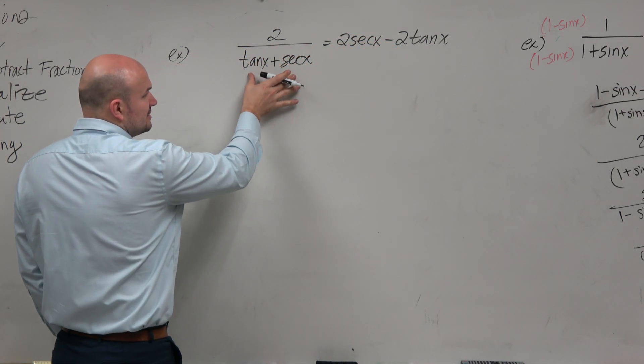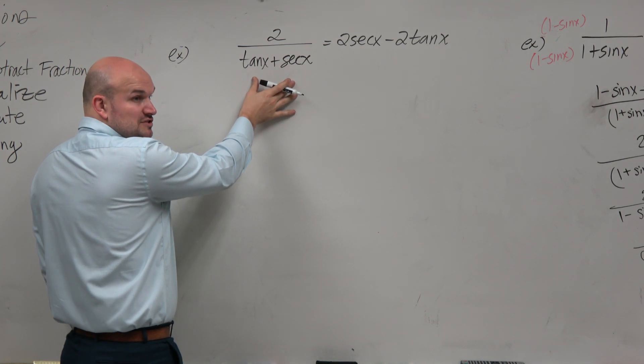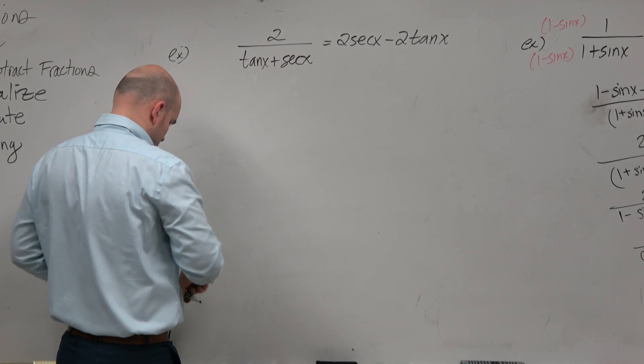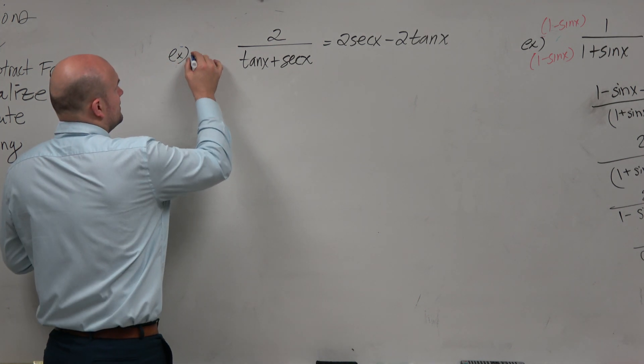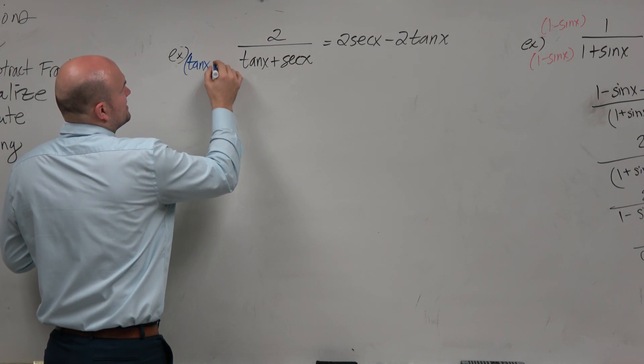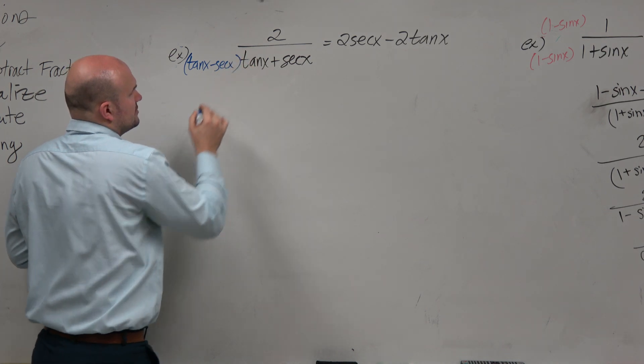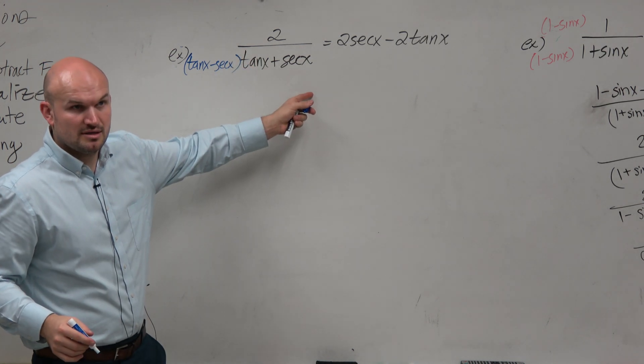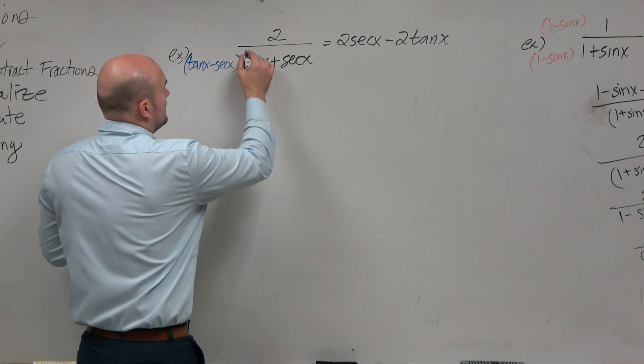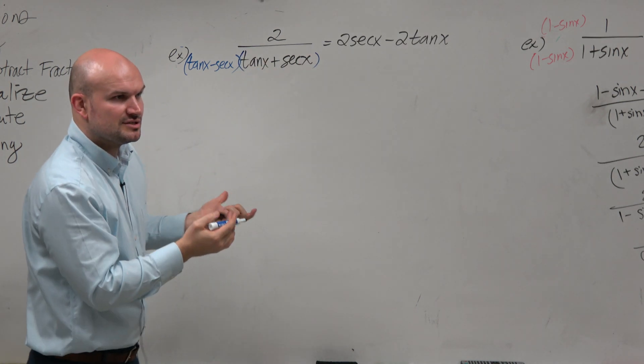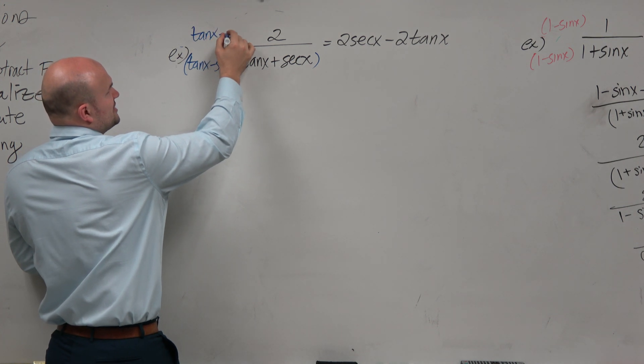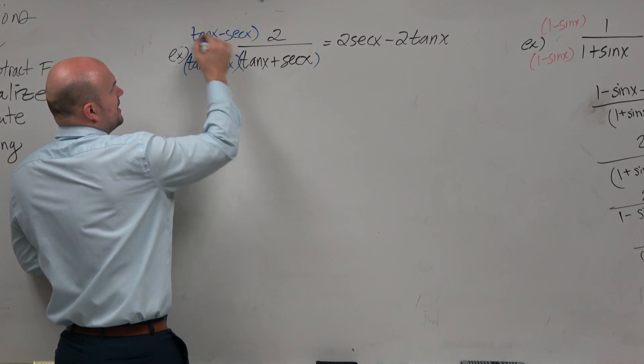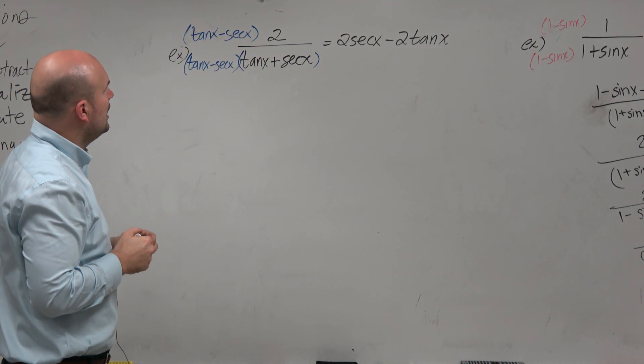So let's think about this. The conjugate that would create the difference of two squares here is going to be tangent of x minus secant of x. That's now a difference of two squares, right? Really easy to multiply. And then just remember, it's a fraction. So if we want to keep this fraction the same, to keep the balance of the equation the same, we've got to multiply the same on top and bottom.